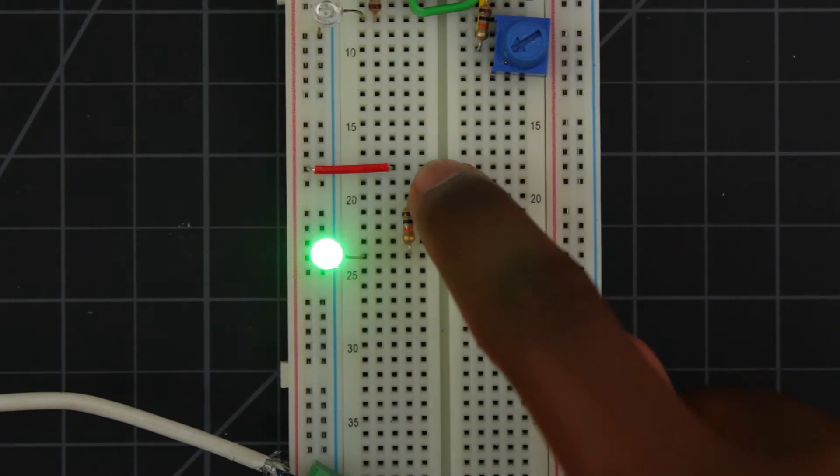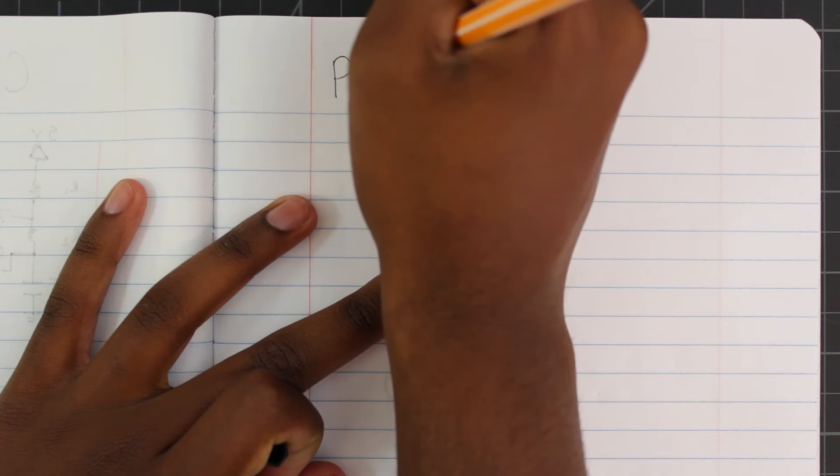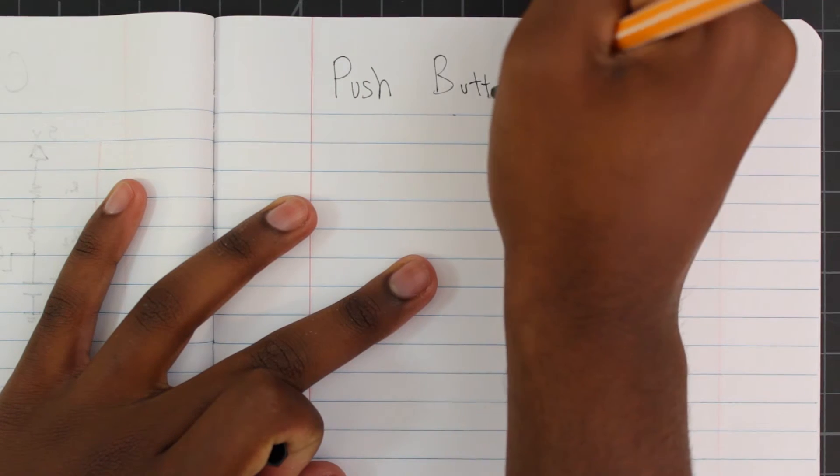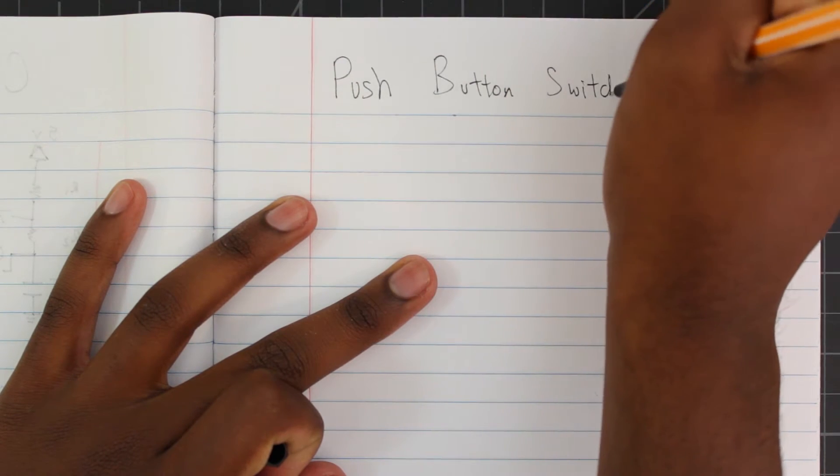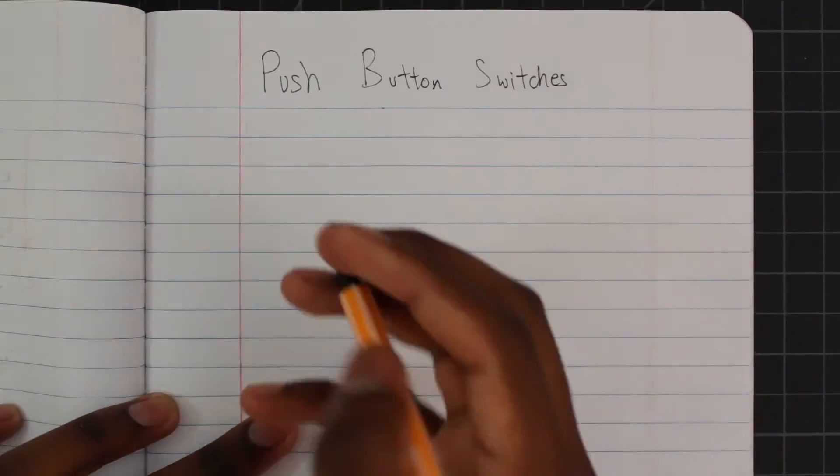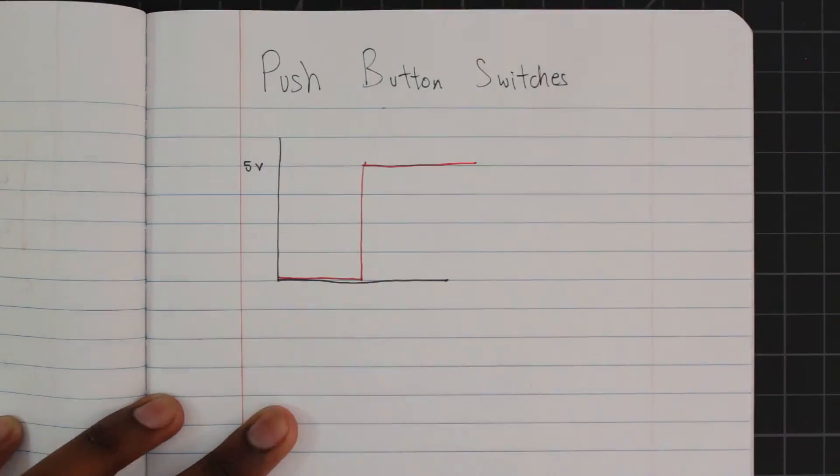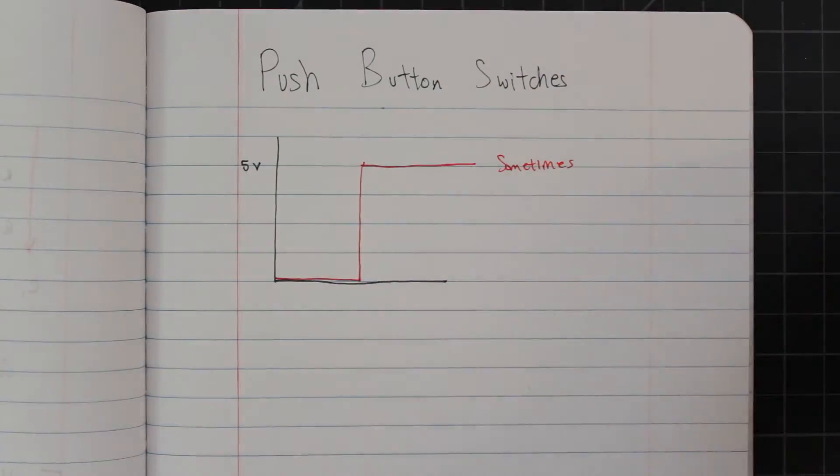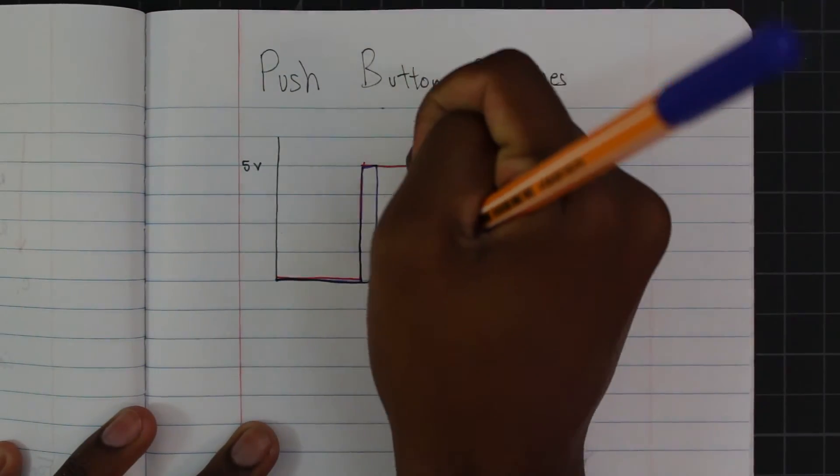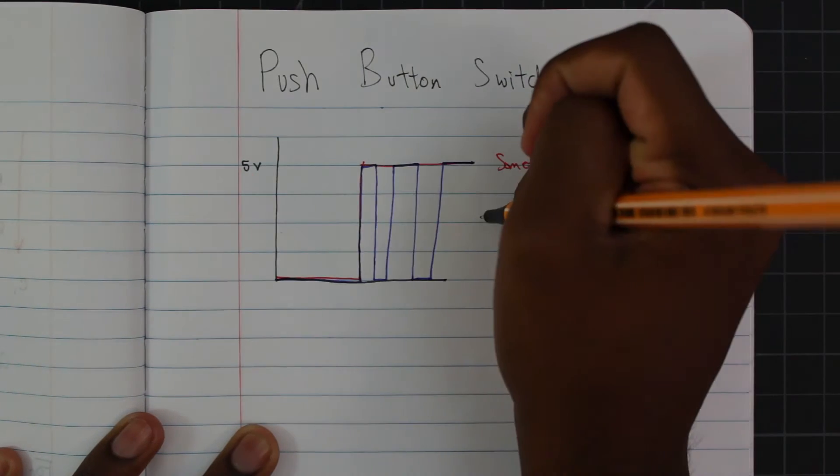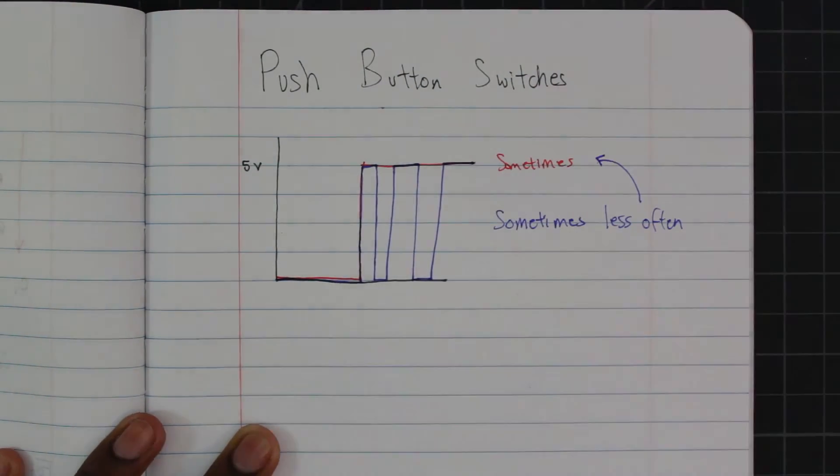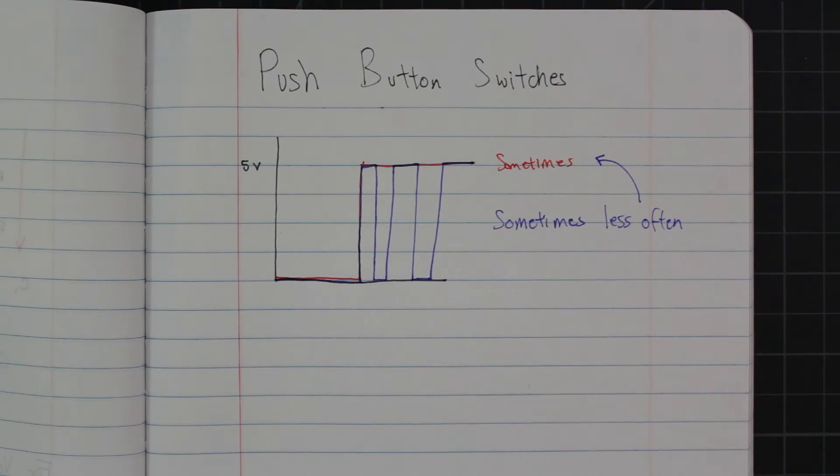Now we could just use a push button switch in a normal configuration like this, but like I explained in the last video, sometimes these cheap switches just don't make contact only once. Here, let me explain. Ideally, this is what happens. We press the button and the signal goes straight up to 5 volts. Now this happens sometimes. Most of the time, in fact. Other times though, the signal will go up and come down and then go up again and finally settle somewhere.